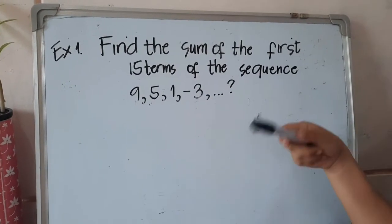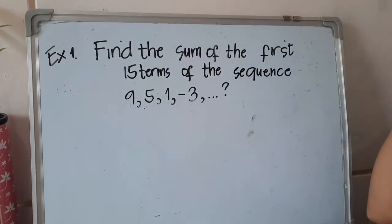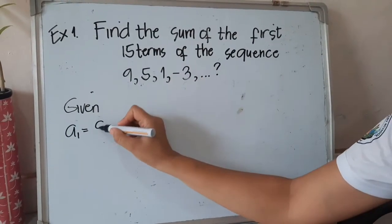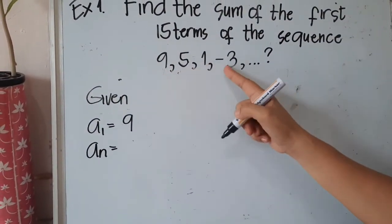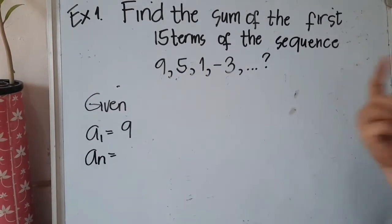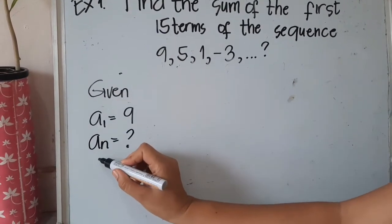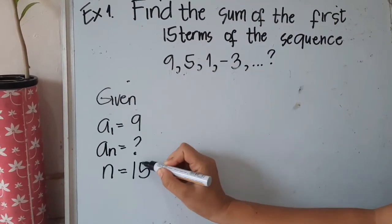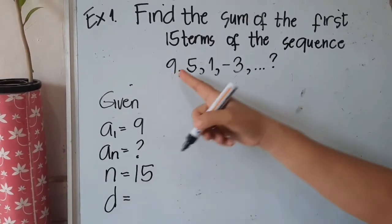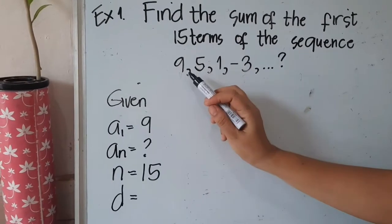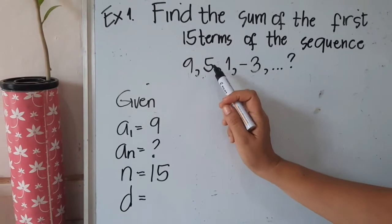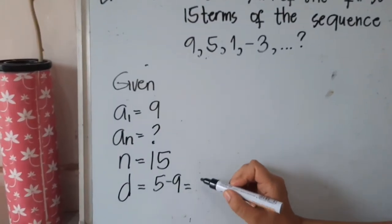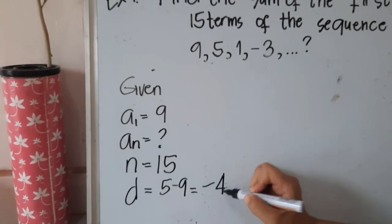Which formula do we use? First, identify the givens. Our first term is 9. We are only given up to the fourth term, so we don't know the last term. The number of terms n is 15. For the common difference, we subtract the second term minus the first term: 5 minus 9 equals negative 4. So d equals negative 4.